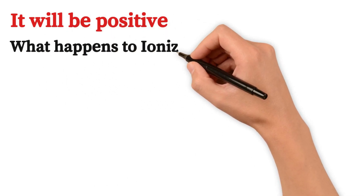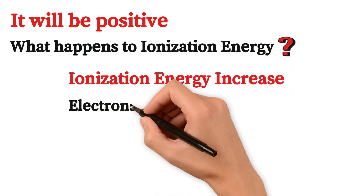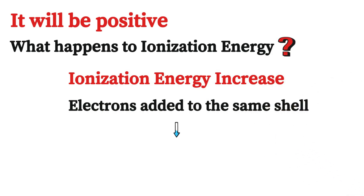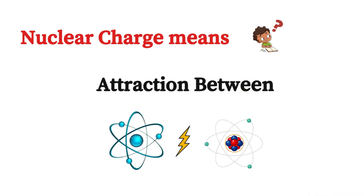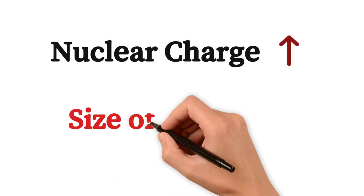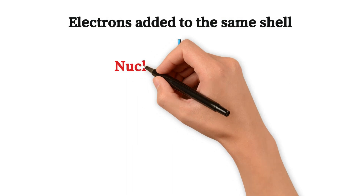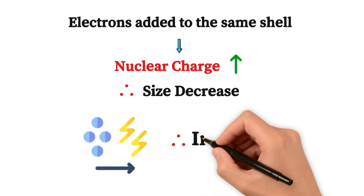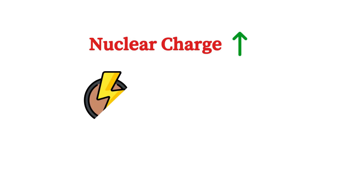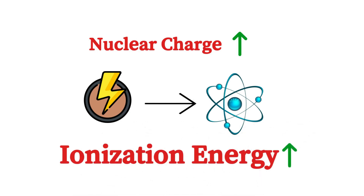Going along the period, ionization energy increases because electrons are added to the same shell and nuclear charge increases. Nuclear charge means the attraction between electrons and protons. Since nuclear charge increases, the size of the atom decreases. And since the nuclear charge is very high, we need to supply more energy to remove an electron, so ionization energy increases going along the period.